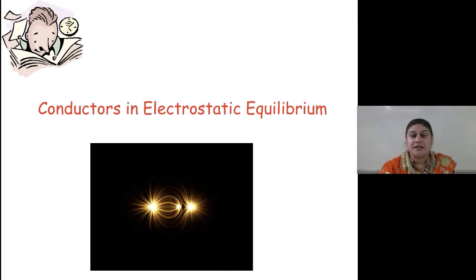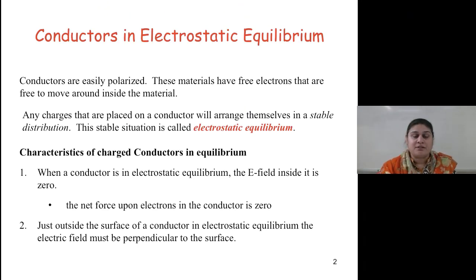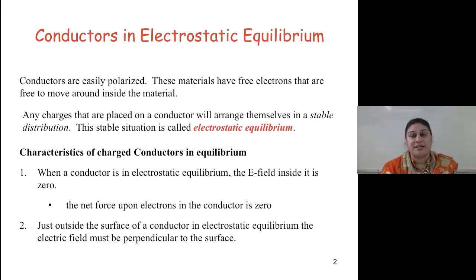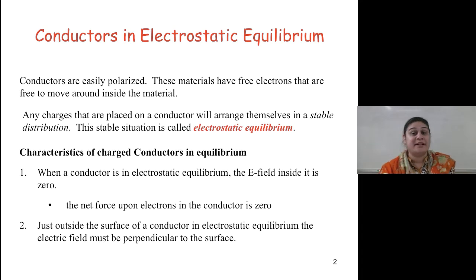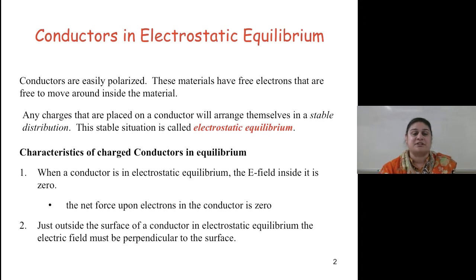Conductors in electrostatic equilibrium. Conductors are easily polarized, meaning positive and negative charges can be separated. These materials have free electrons that are free to move around inside the material. Any charges placed on a conductor will rearrange themselves into a stable distribution called electrostatic equilibrium. When the conductor is in electrostatic equilibrium, the field inside it is zero, so the net force upon the electrons inside the conductor is also zero.